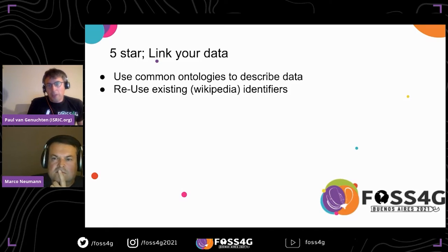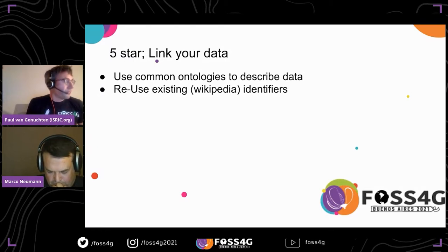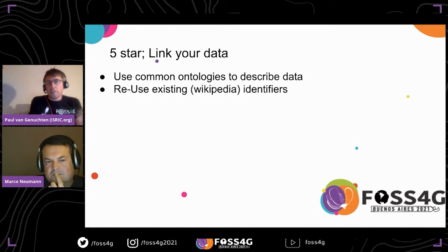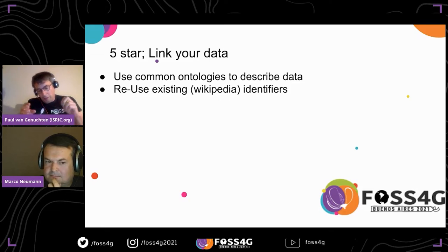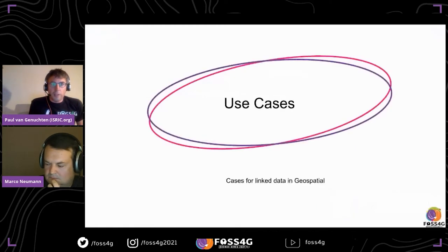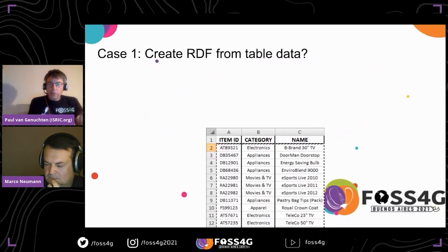For example, if you publish a dataset with cities on the internet, you could reference those same cities on Wikipedia, creating links between the two concepts. You'd have the definition of a city on Wikipedia and the geometry on your side.